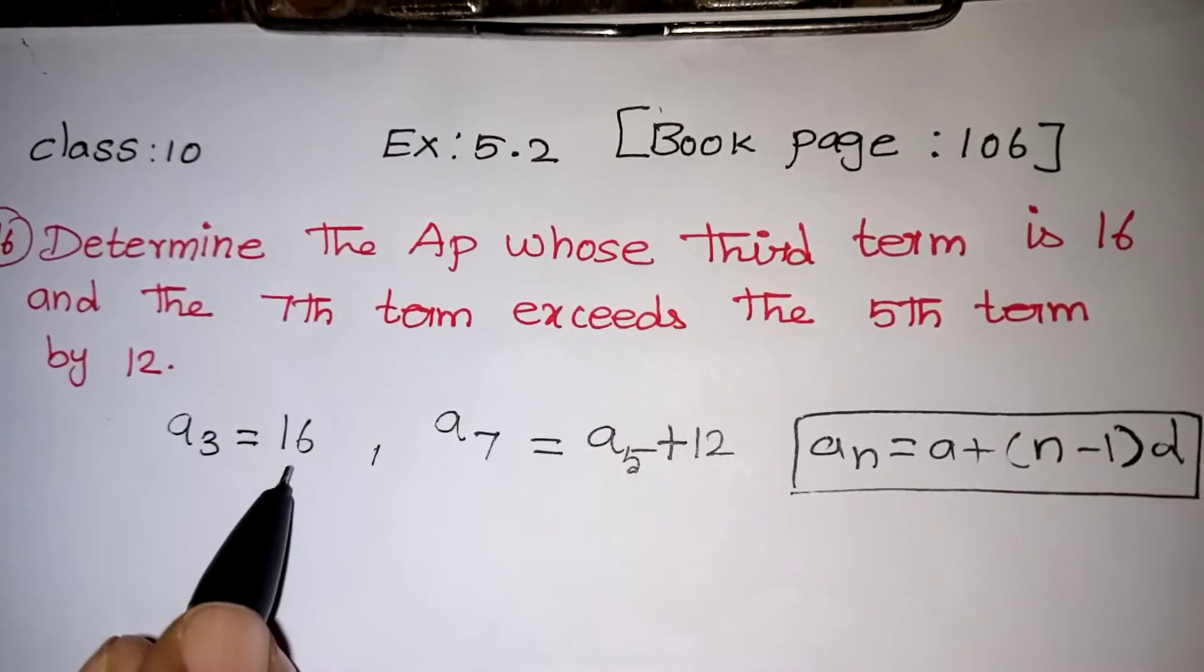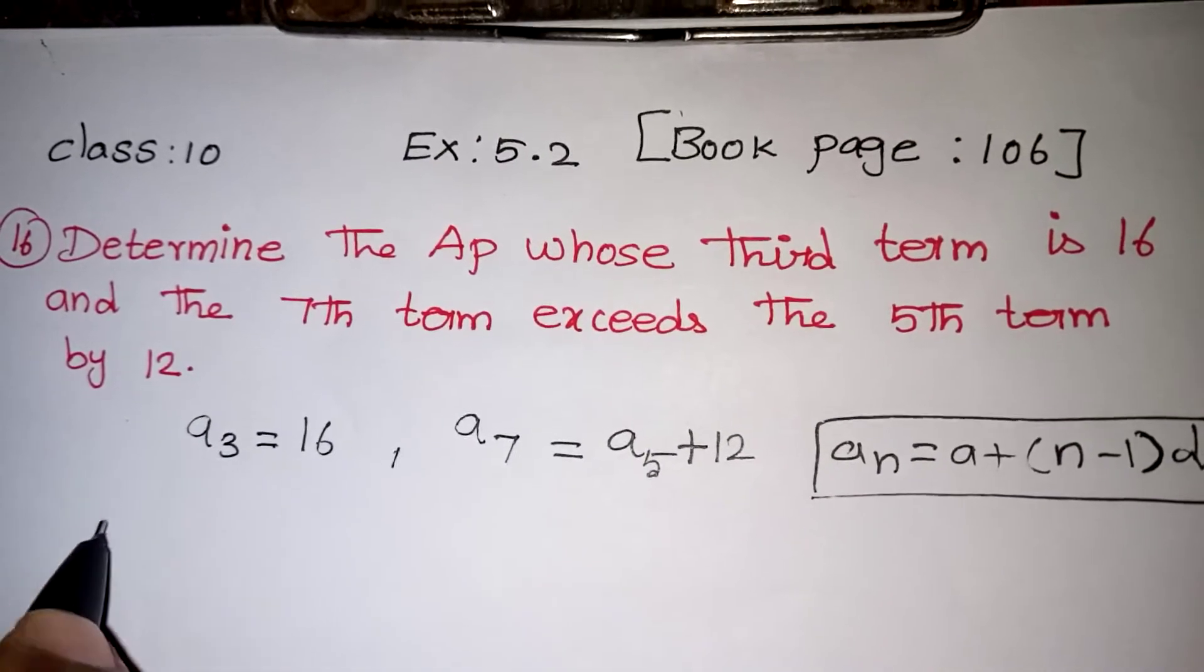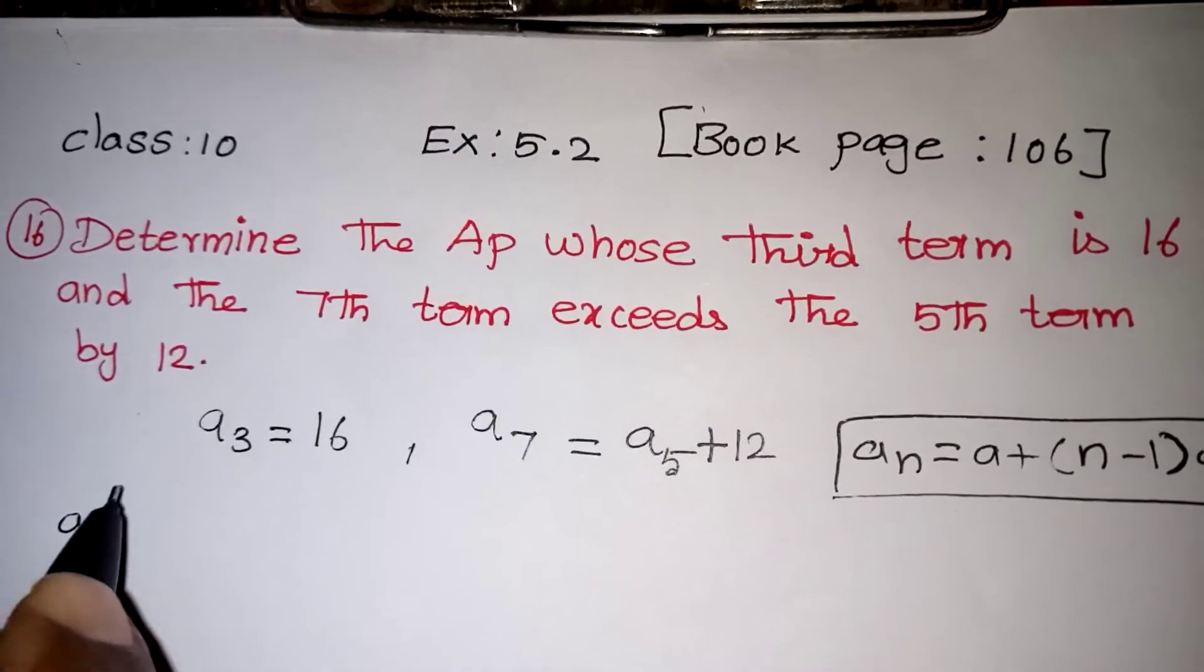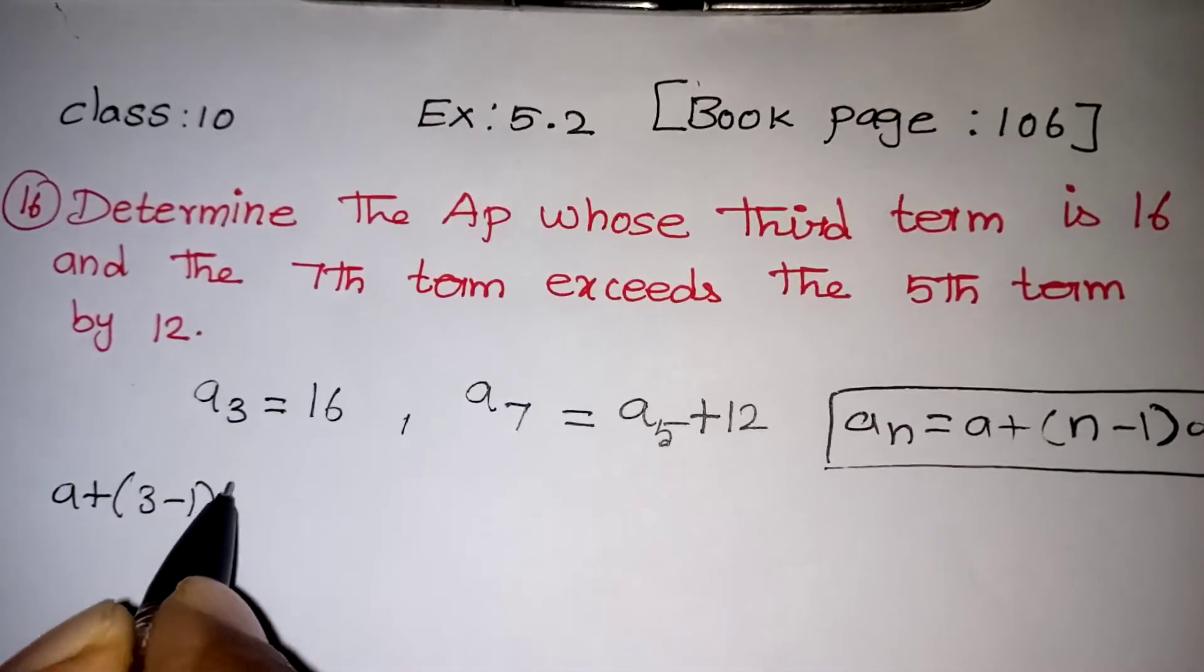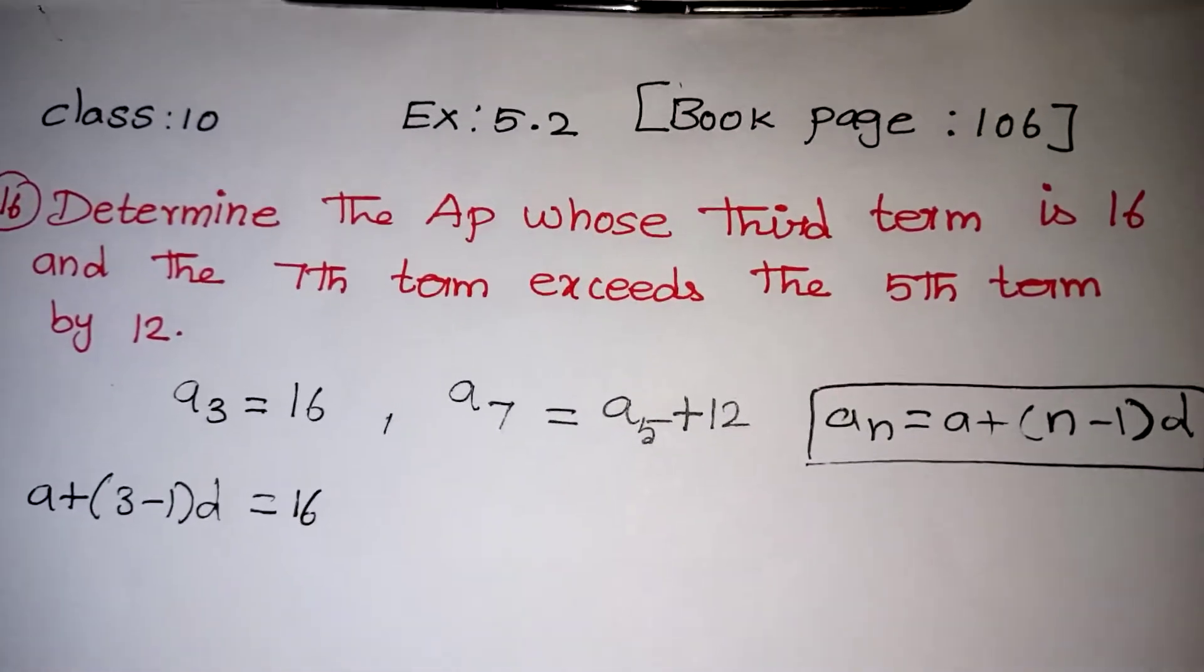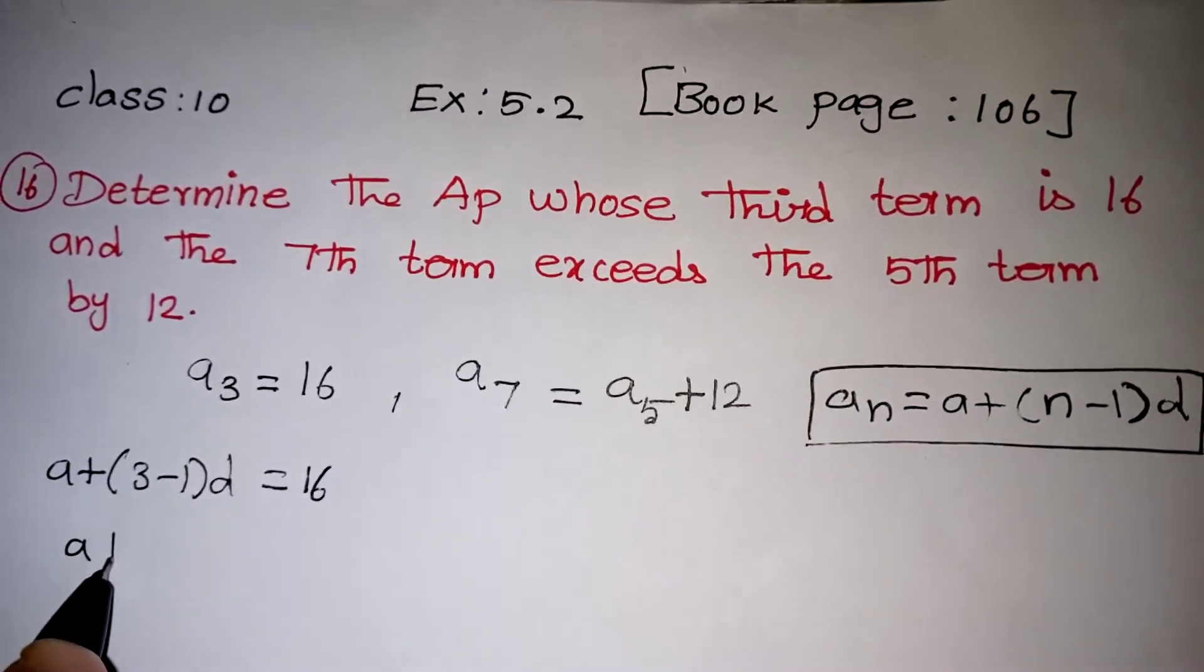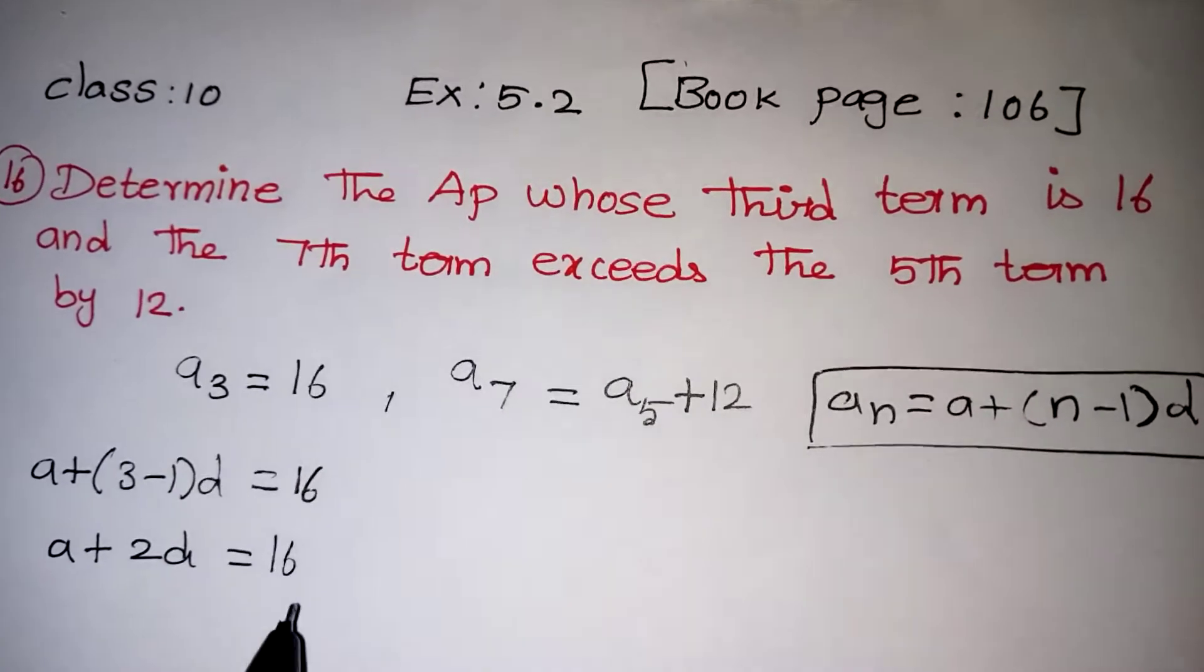Here, A₃ equals 16. In the place of n, we have 3. This can be written as A plus (n minus 1)D. So n is 3 here, so 3 minus 1 into D, which equals 16. A plus 2D equals 16. This is our first equation.